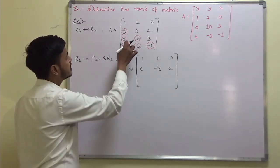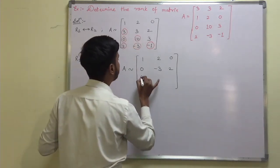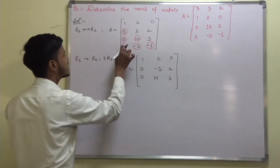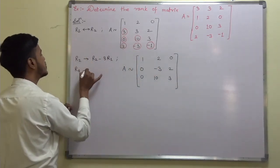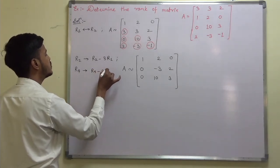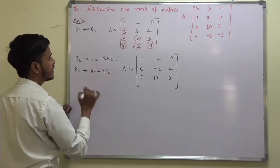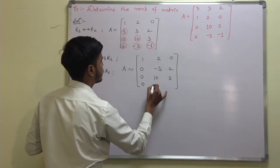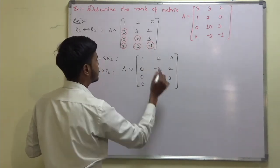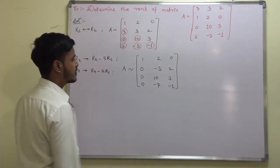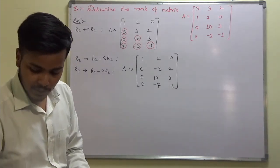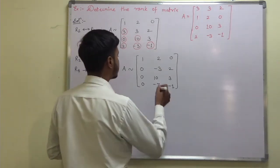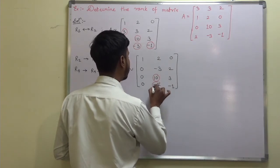Row r3 already has 0 in the first position, so keep it as 0 10 3. Now I have to make the first element of r4 zero, so r4 changes to r4 minus 2r1. Result: 0, then minus 3 minus 4 which is minus 7, then minus 1. So r4 becomes 0 minus 7 minus 1.